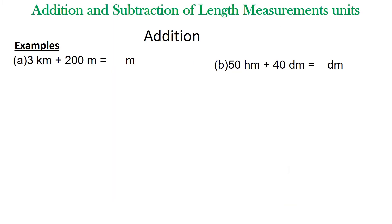Welcome. Today we are going to add and subtract length measurement units. Let's start with addition. We are given two examples to work out. The first one is 3 kilometers plus 200 meters — how many meters? The second one is 50 hectometers plus 40 decimeters — how many decimeters?